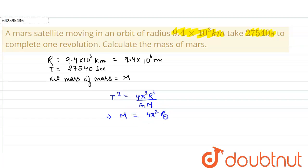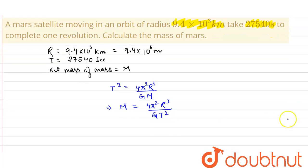T², now substitute the data: 4π² into R is 9.4 × 10⁶ raised to the power 3...